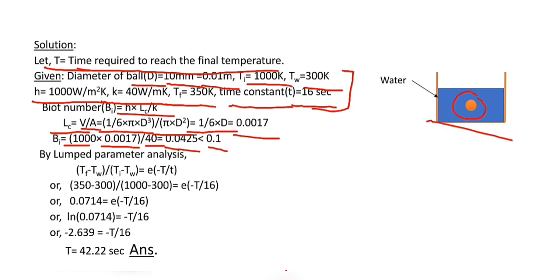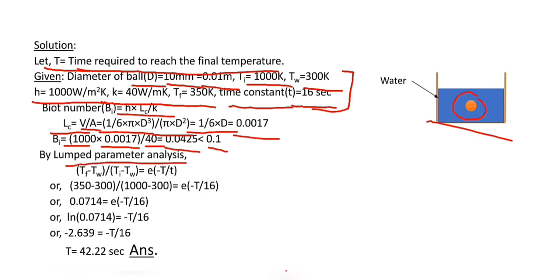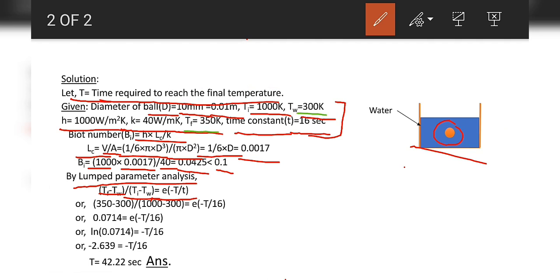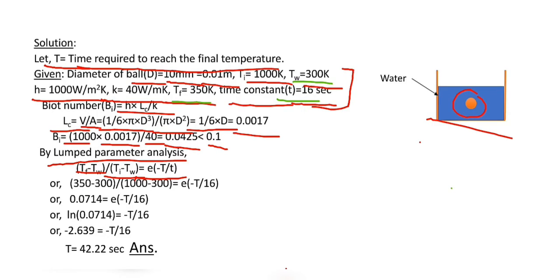So we can apply lumped parameter analysis. By lumped parameter analysis, final temperature minus ambient temperature divided by initial temperature minus water temperature equals e to the power minus T divided by time constant. Here Tf, Tw, and time constant are known. When thermal time constant is not given, it is calculated by hA divided by rho V C.